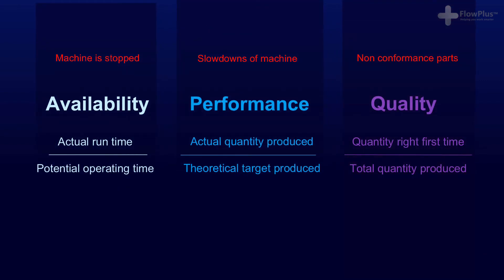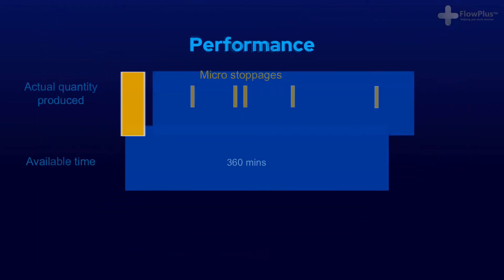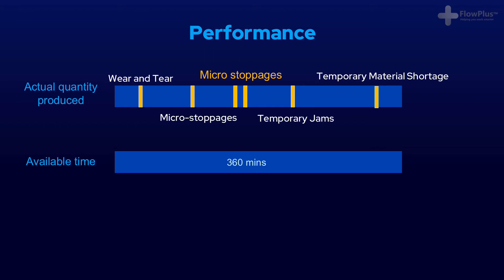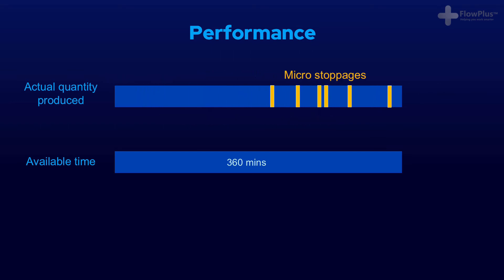Now that we have taken into account times where the machine has stopped, we need to account for the times the machine is not running at full speed — this is the performance rate. There are many reasons for a machine not running at full speed: through wear and tear they may start to slow down, microstoppages or temporary jams might cause equipment to briefly stop, or input material may have a temporary shortage. In reality, it is not practical to measure all of these microstoppages. For example, throughout a shift a machine may have thousands of half-second stoppages, which cannot practically be measured.